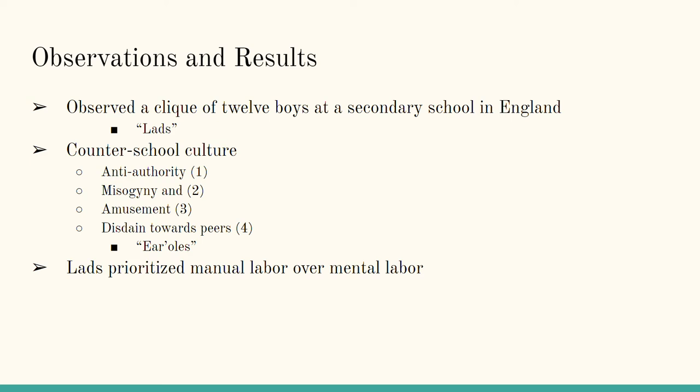Moving on to Paul Willis's observations and results: the methodology that Paul Willis followed in his study is that he observed a clique of 12 boys at a secondary school in England. This specific clique would always refer to themselves as 'lads,' and that's how Paul Willis also referred to them. A huge thing that the lads exhibited was a whole vibe that just kind of screamed counter-school culture.